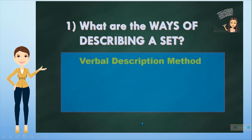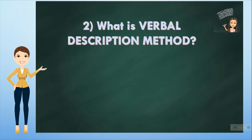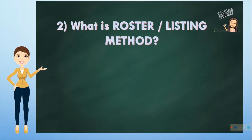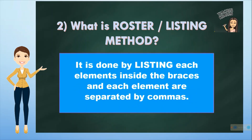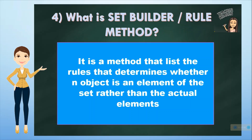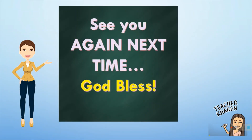What are the ways of describing a set? We have three. The first one is the verbal description method. The second is the roster or listing method — it is done by listing each element inside the braces, and each element is separated by a comma. The third is the set builder or rule method — it is a method that states the rules that determine whether an object is an element of the set rather than the actual elements. See you again next time. God bless and thank you.